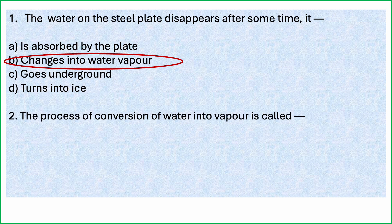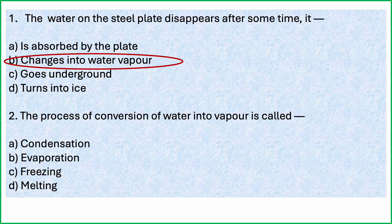The process of conversion of water into vapour is called — options are: condensation, evaporation, freezing, melting. Which is the correct answer? The process of conversion of water into vapour is called evaporation.